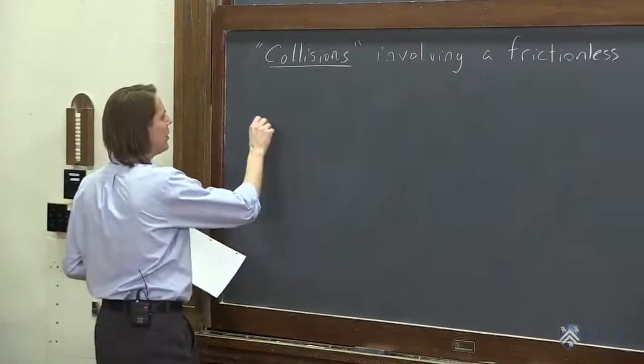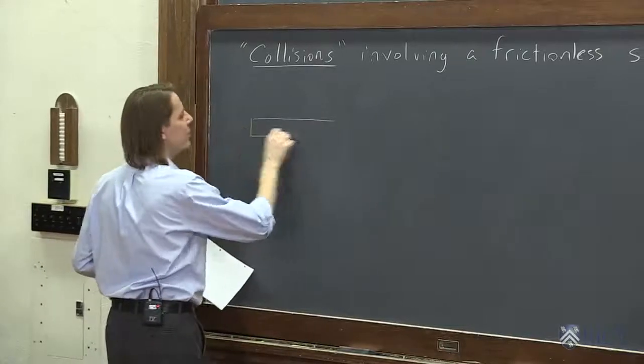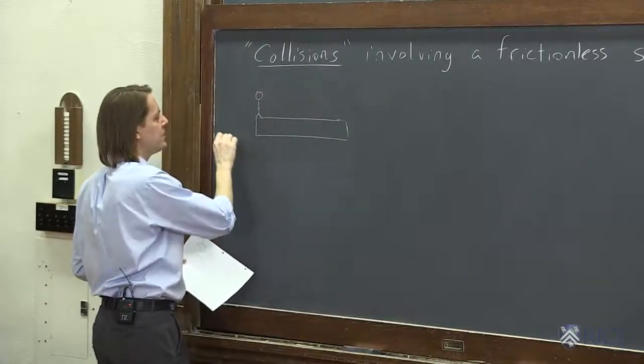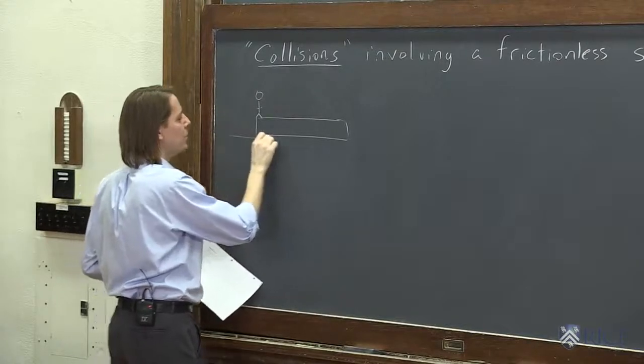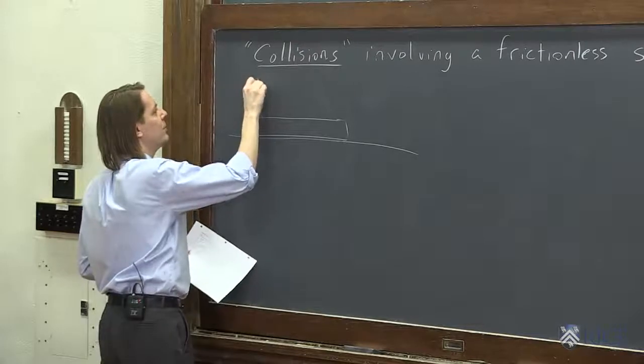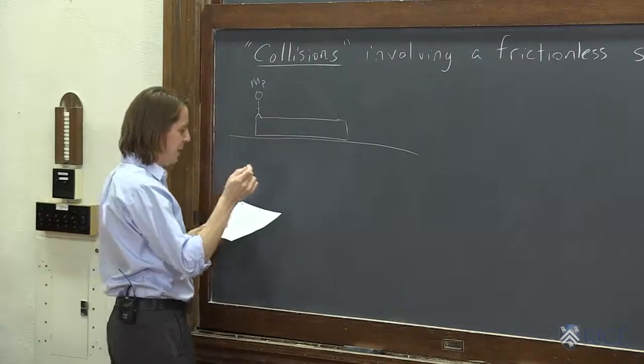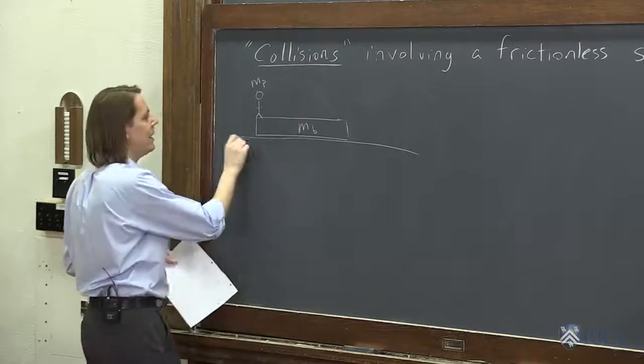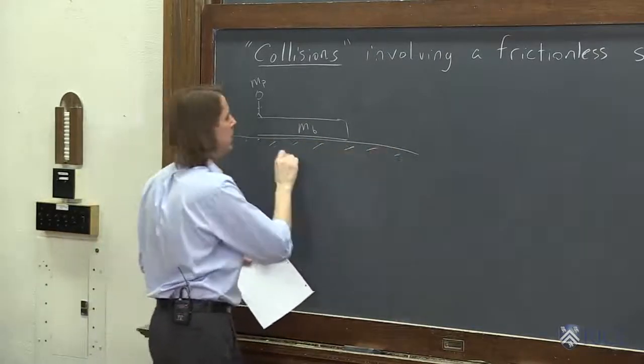So usually you're talking about a person on a frictionless sled or a barge or something that's free to move. And the person has a significant mass mp and the barge, I'll call it a barge, has a significant mass mb, and this is frictionless.